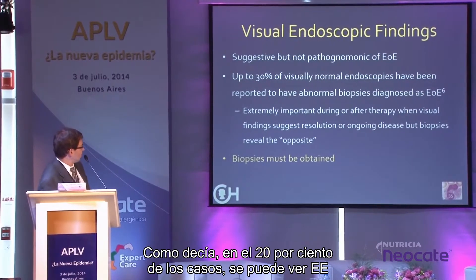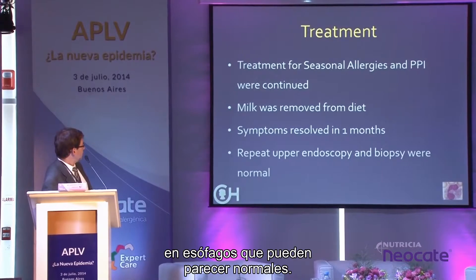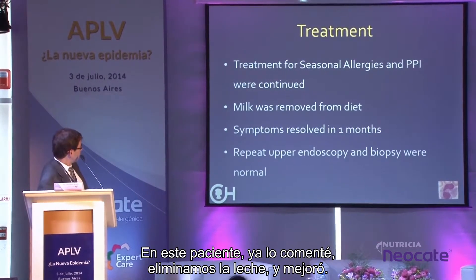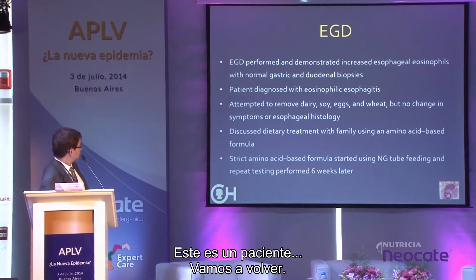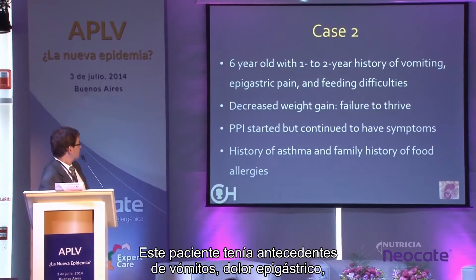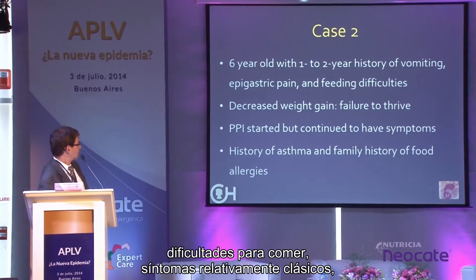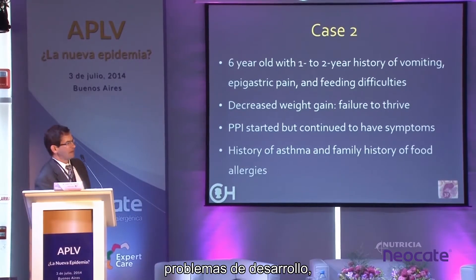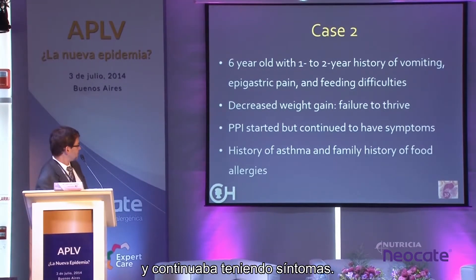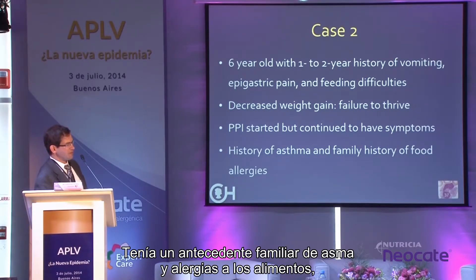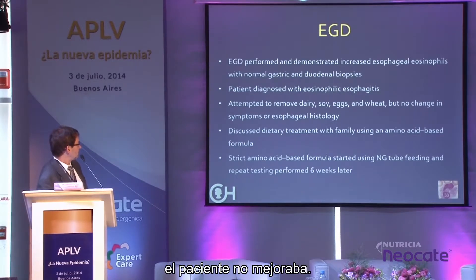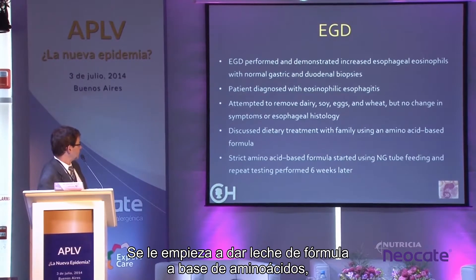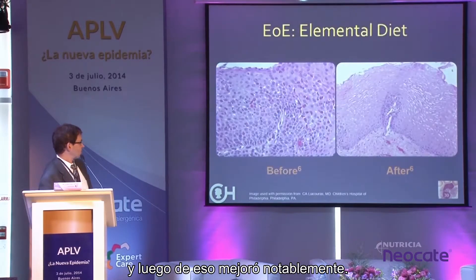In one patient we simply removed milk and they got better. Another patient had classic symptoms — vomiting, epigastric pain, feeding difficulties, failure to thrive — started on reflux medication with continued symptoms, with a clear history of asthma and food allergy. They underwent upper endoscopy, were diagnosed with EOE, tried removing some foods by history without improvement, were then started on amino acid formula, and improved. This brings up the whole issue of dietary management.